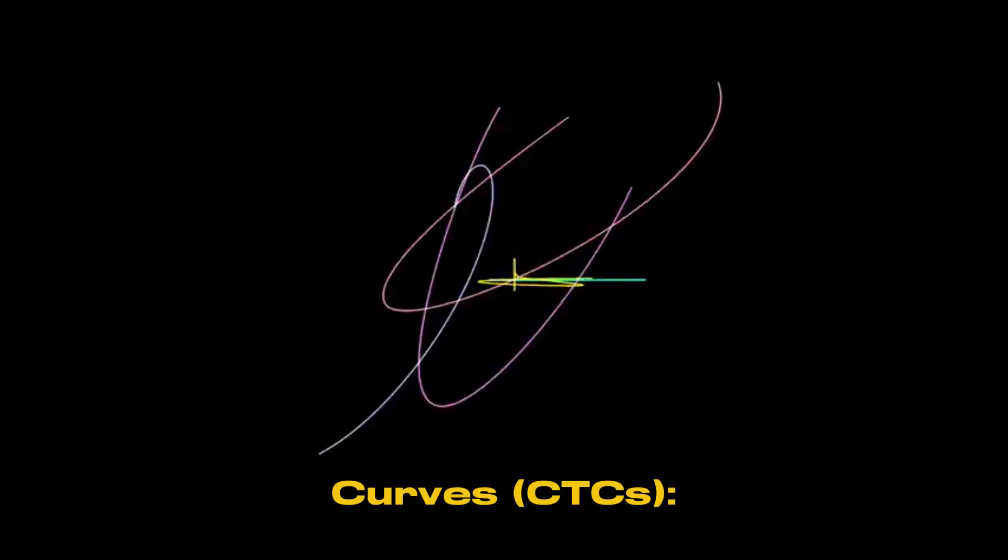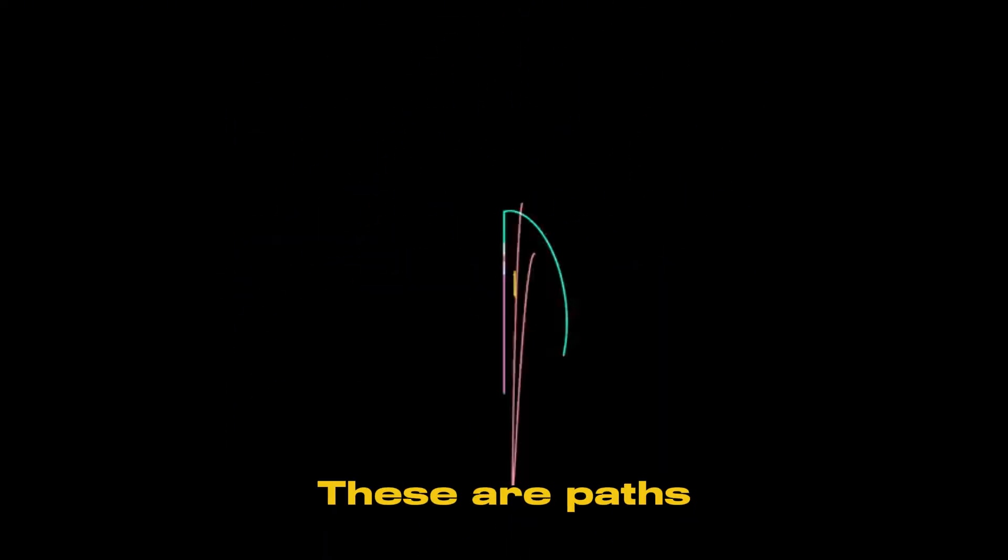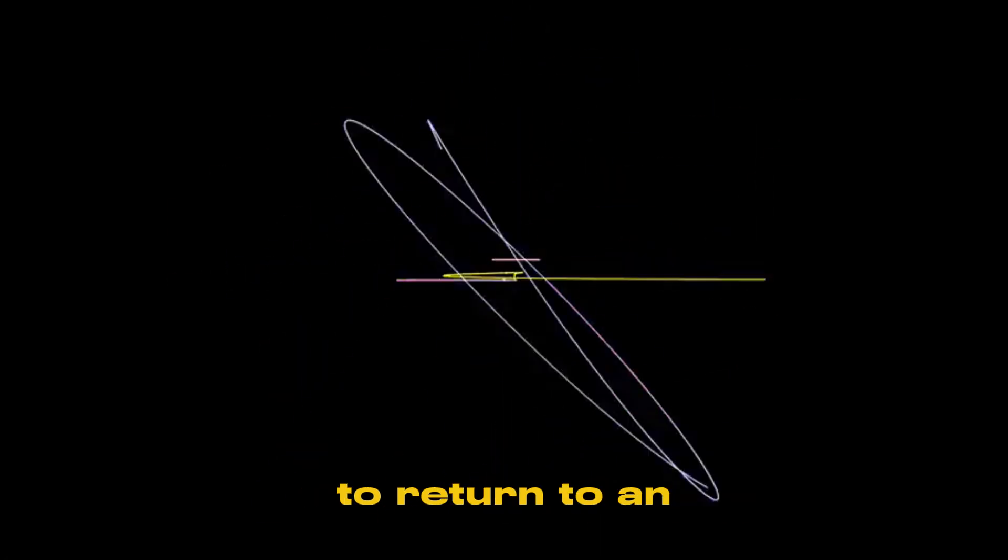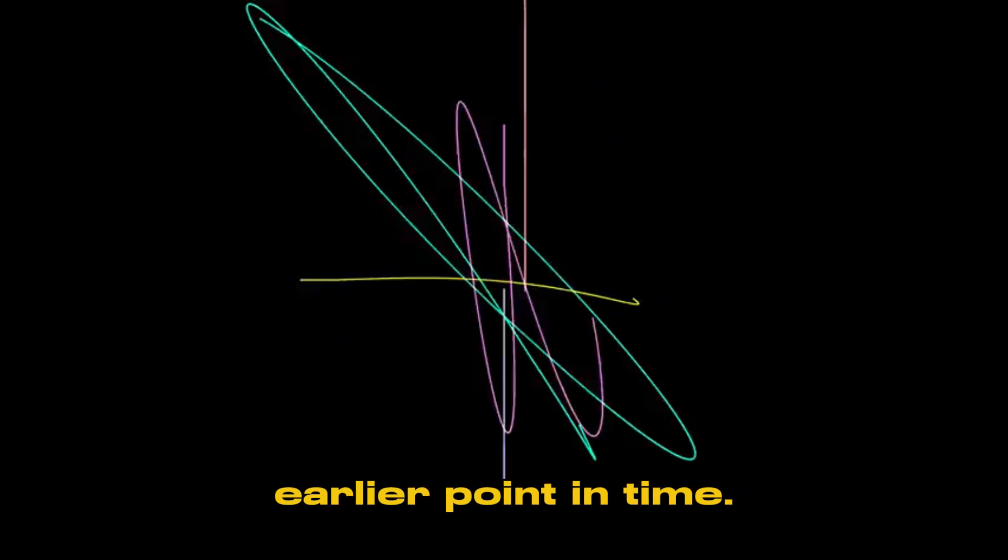Closed time-like curves or CTCs. These are paths through spacetime that loop back on themselves, potentially allowing an object to return to an earlier point in time.